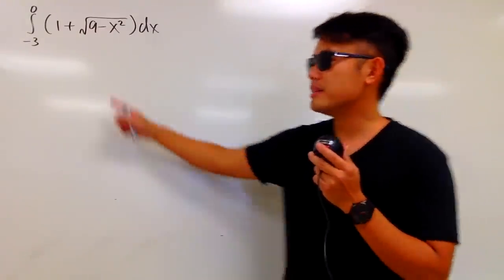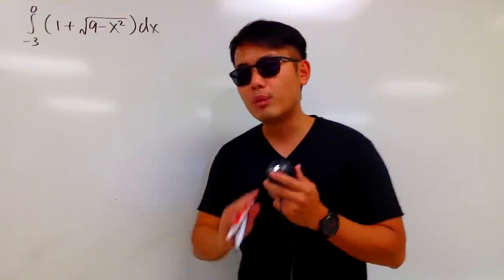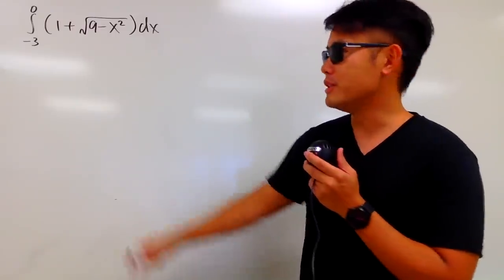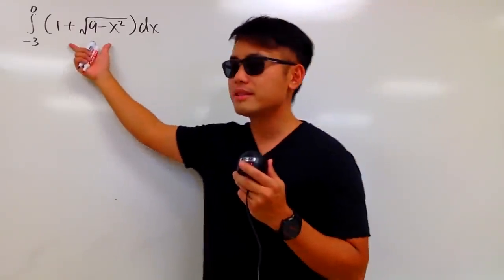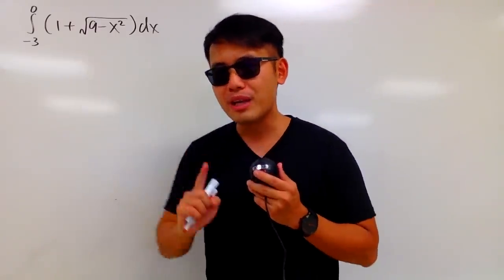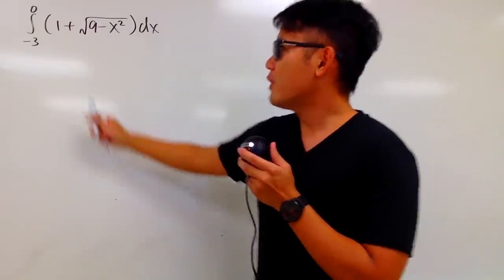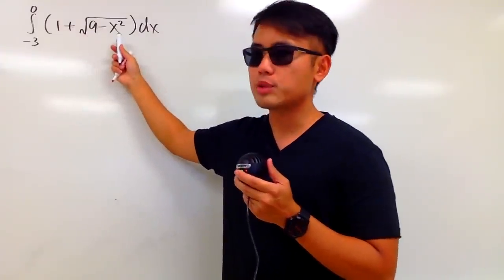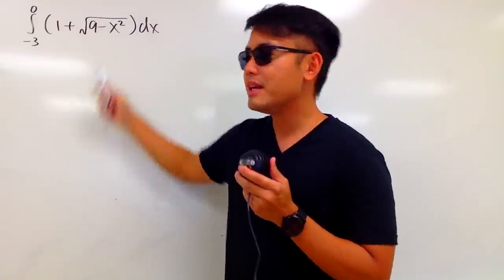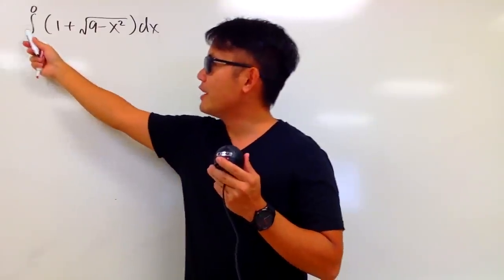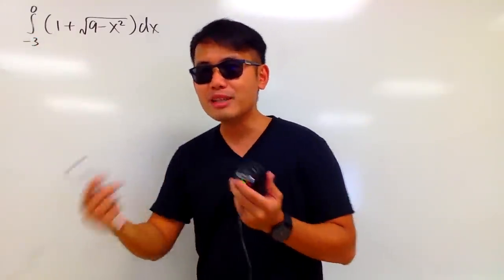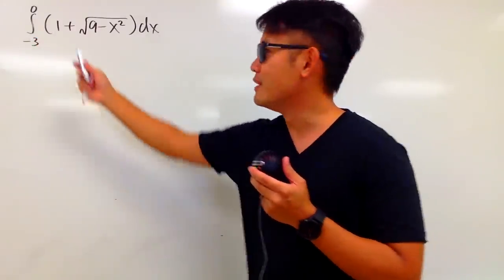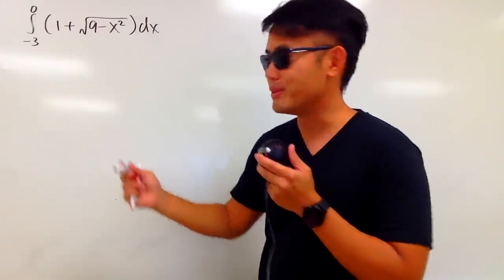We are going to calculate this integral, but we are not actually going to do the integration step. Rather, we can actually interpret this as areas. We notice we have 1 plus square root of 9 minus x squared inside, and when we have an integral of a sum, it's actually the same as the sum of two integrals.